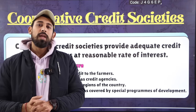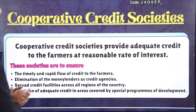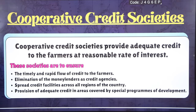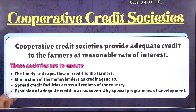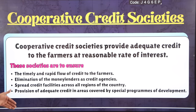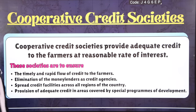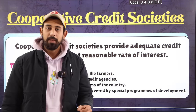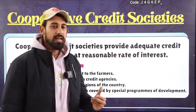Cooperative societies provide adequate credit to farmers at a reasonable rate of interest. Their work is to give timely and rapid credit to farmers, eliminate money lenders, and ensure credit facilities in every region, including areas covered by special development programs.